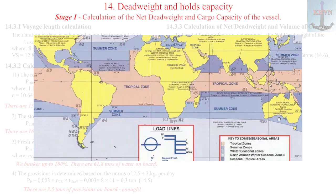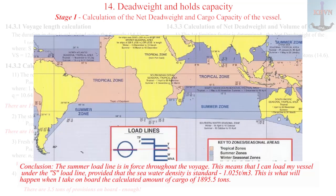This means that I can load my steamboat under the S load line, provided that the sea water density is standard, 1.025 tons per cubic meter. This is what will happen when I take on board the calculated amount of cargo of 1895.5 tons.